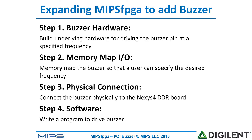In this session, I've shown how to add a buzzer to the MIPS FPGA system. The steps will be similar for any number of peripherals you want to add: Step one, create the hardware; step two, memory map the I/O; step three, physically connect the peripheral to the Nexus 4 DDR board; and step four, write software to drive that peripheral.